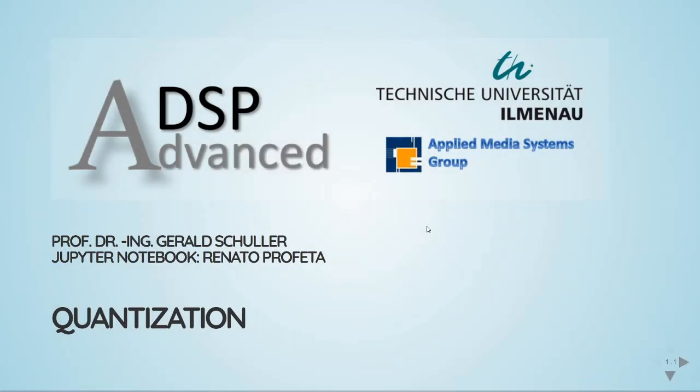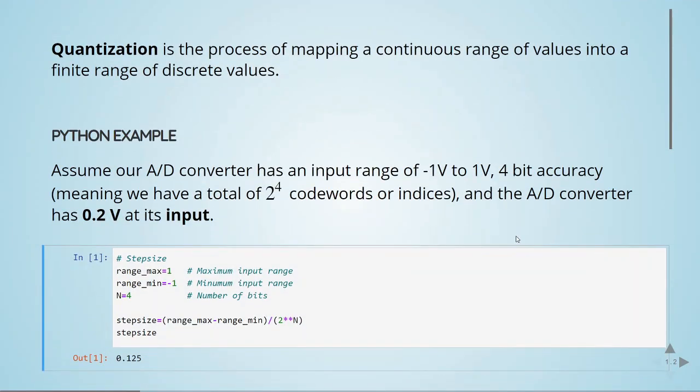Quantization is, together with sampling, a fundamental part in analog-to-digital conversion. Quantization is the process of mapping continuous values into a finite range of discrete values.